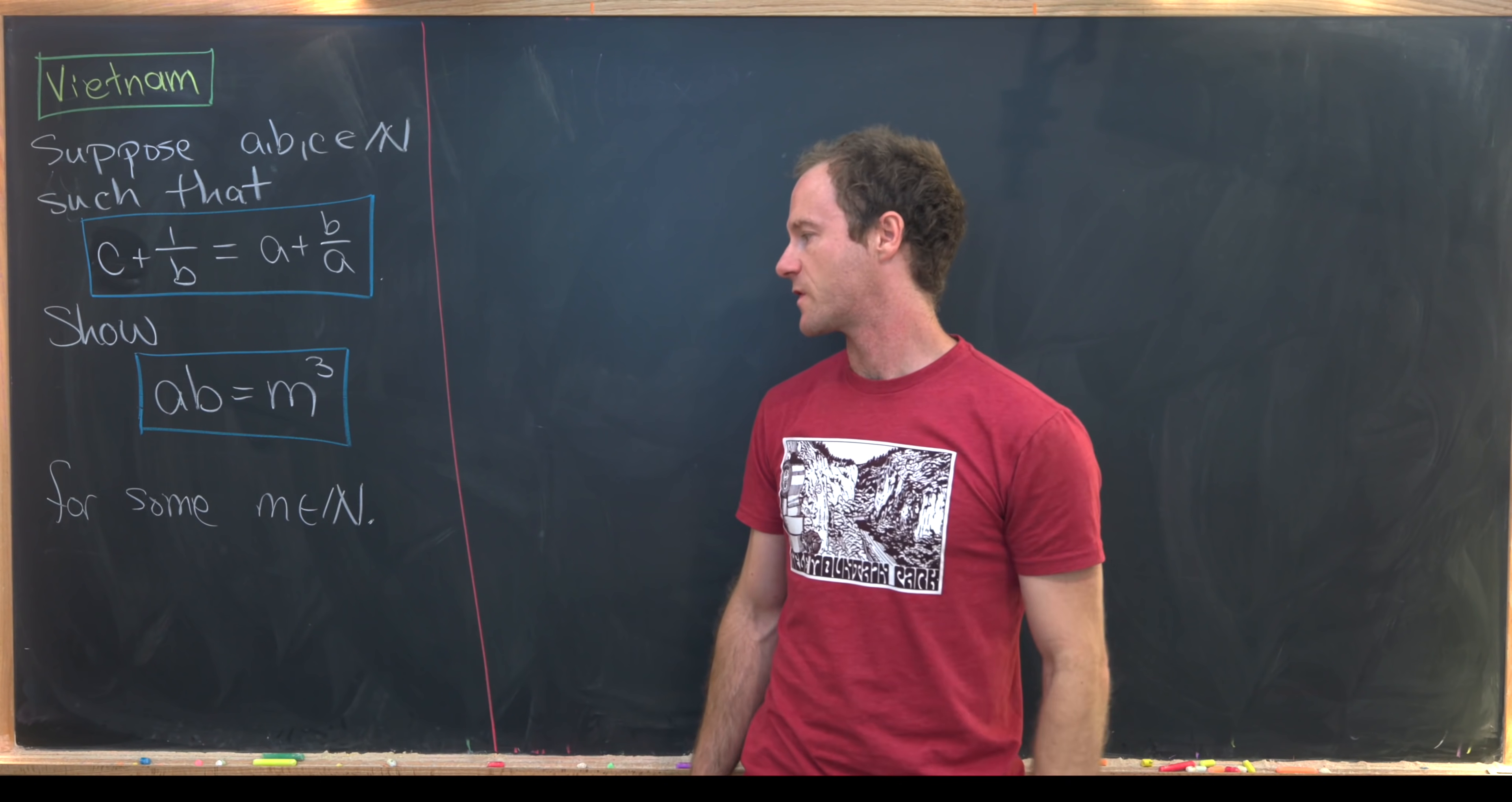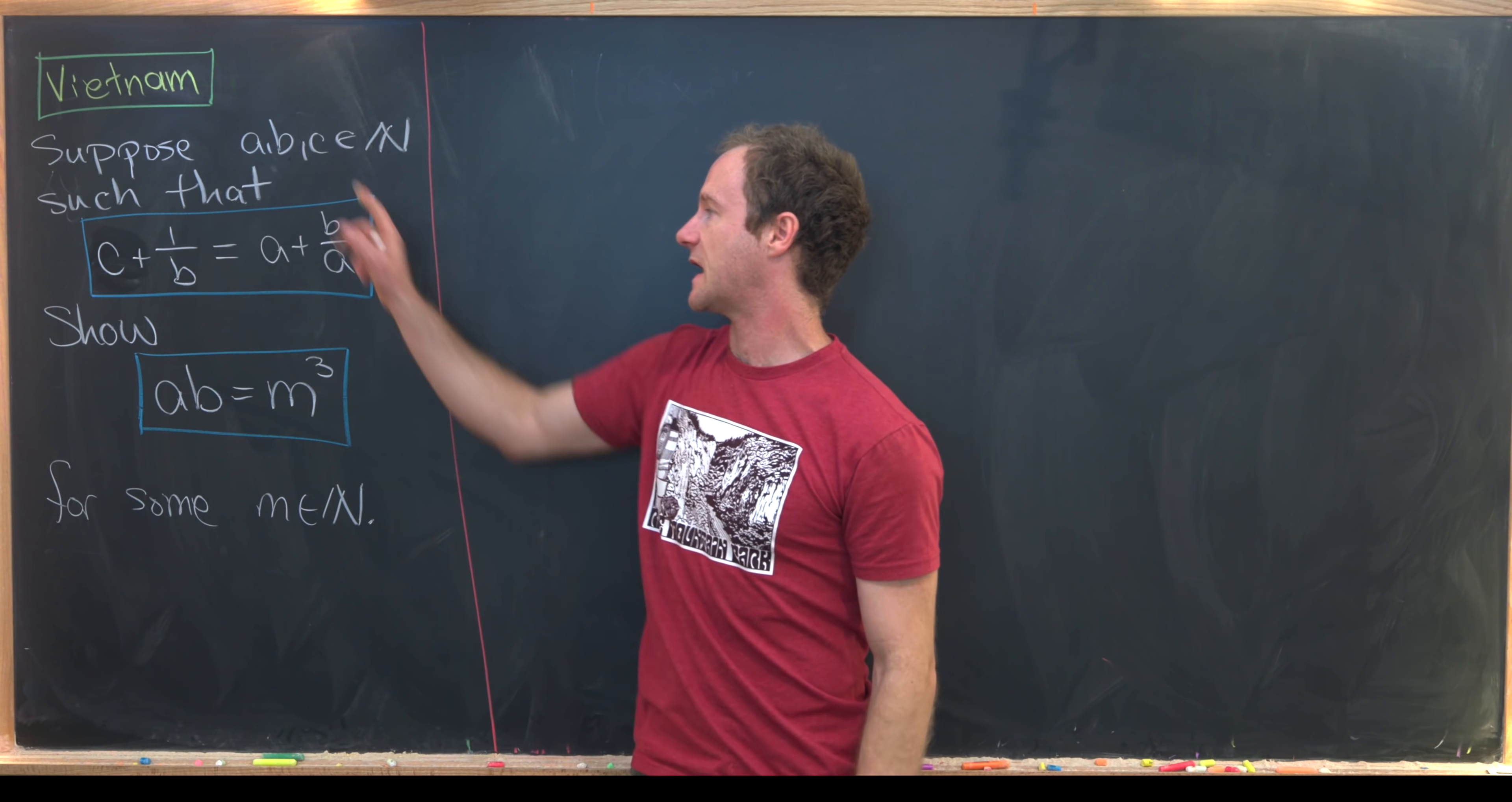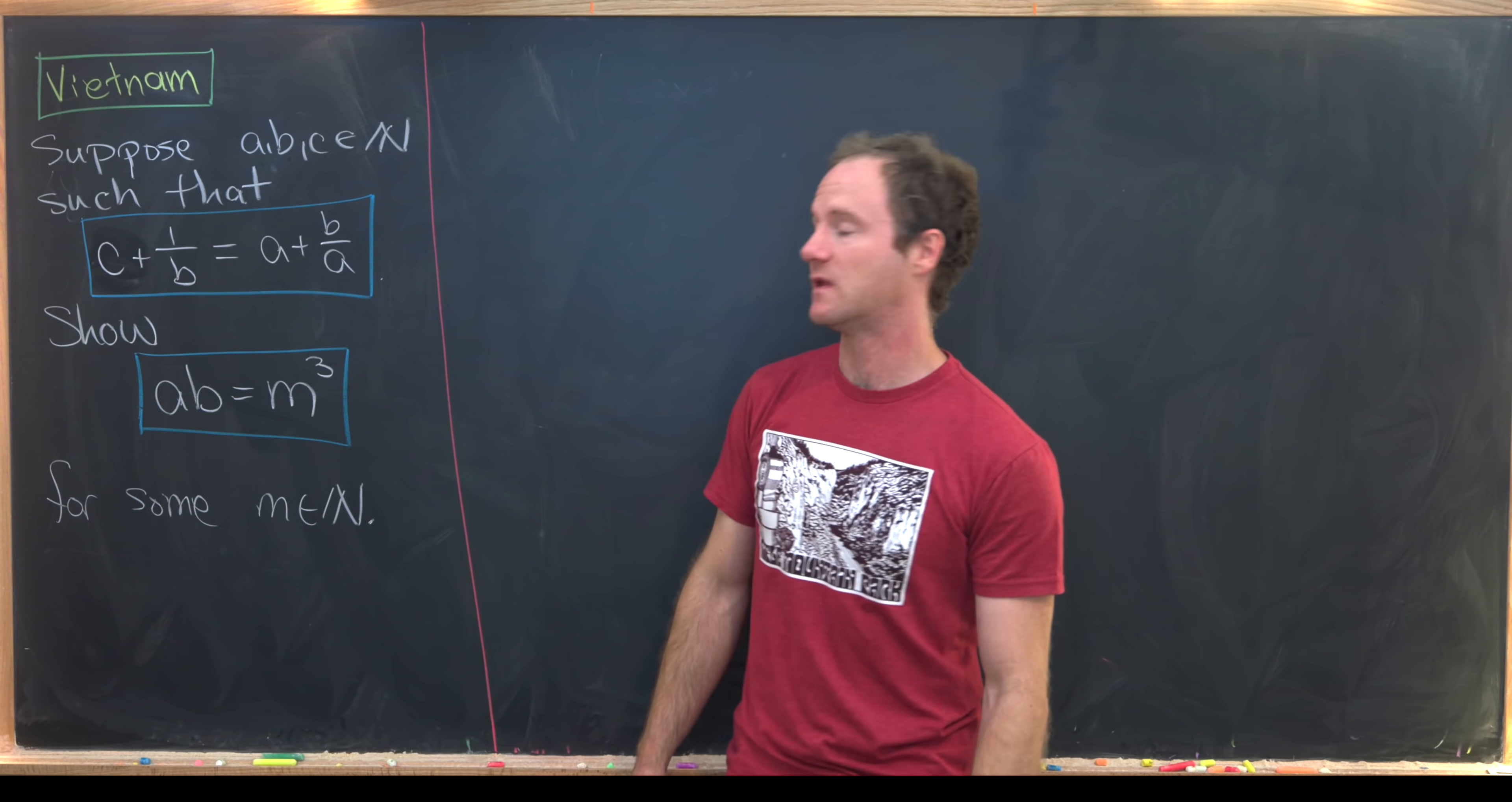Here I've got a nice little number theory problem involving a perfect cube from Vietnam. So we want to suppose that we've got natural numbers A, B, and C satisfying the following equation: C plus 1 over B equals A plus B over A.